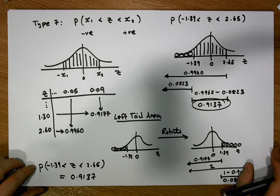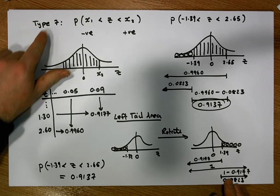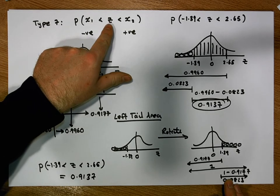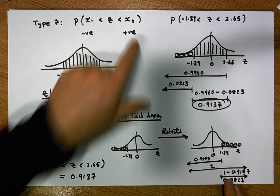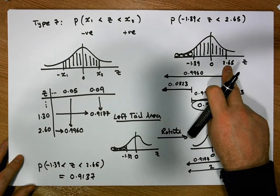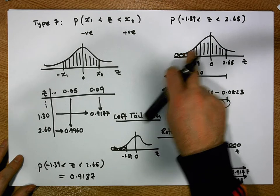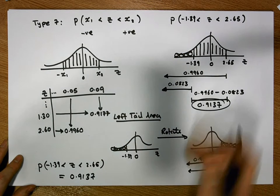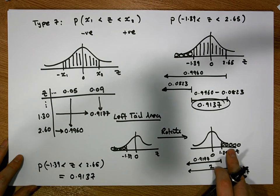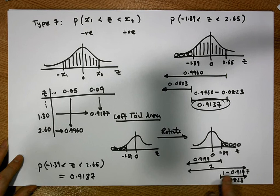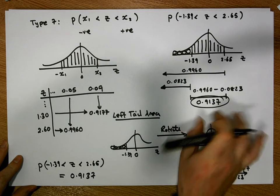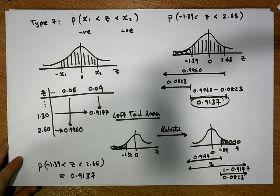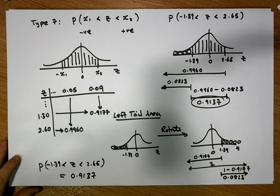Thanks very much for your time. That concludes this short video on how to calculate Type 7 probabilities — the probability of observing a z-score bounded below by a negative value and bounded above by a positive value. We always look up the positive value first, then calculate the unknown tail area using a rotation, and remember: to find an area in a tail you always subtract from one. Then subtract the shorter line from the longer line to get the area in between. I'm Jonathan Lambert with the Mathematics Development and Support Service at the National College of Ireland.